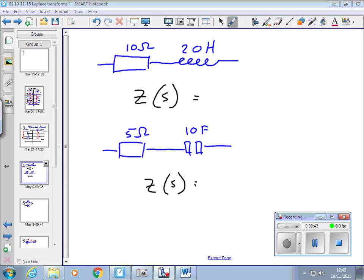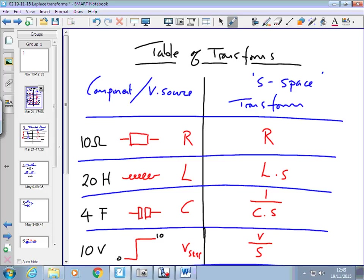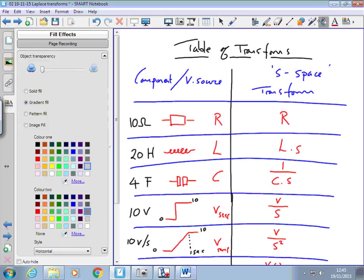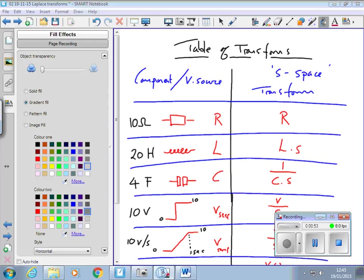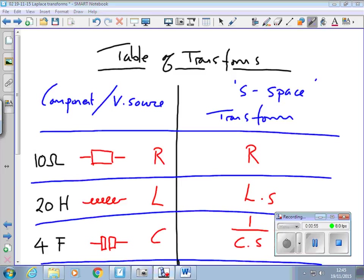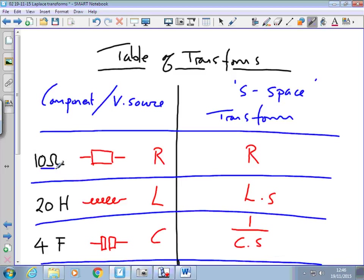If we look at the first one and we look back at the transforms, a resistor of 10 ohms just transformed just goes to R. So that will be 10 ohms.